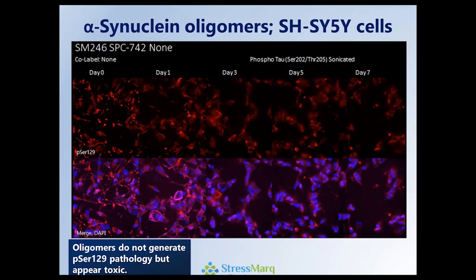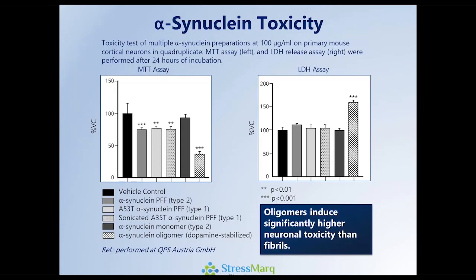When present in CHI-5 cells, alpha-synuclein oligomers show enhanced toxicity. The cells die in the bottom panel, but there is very little change in terms of the phosphoserine 129 pathology in the top panel. Experiments performed by QPS in Austria confirm that fibrils do show some element of toxicity, however the oligomers on the far right-hand side of each insert using both MTT and LDH assays show considerably more toxicity than any of the fibrils, consistent with the literature.